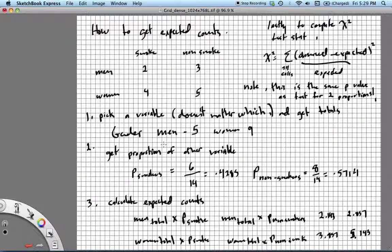So then we want to get the proportion with respect to the other variable. So the proportion of smokers total was six people that smoked, two plus four, divided by the total number of people in our sample. Now, we had how many people total?